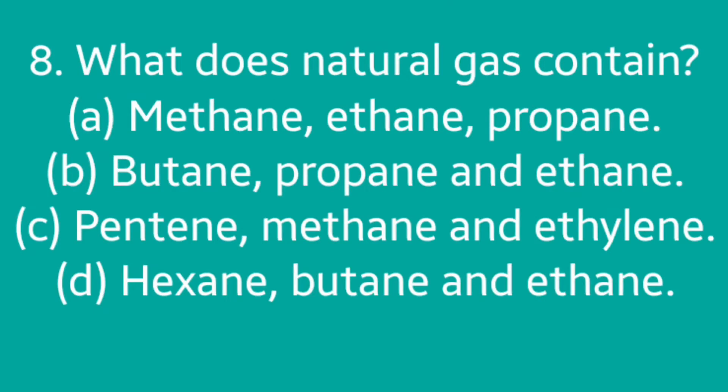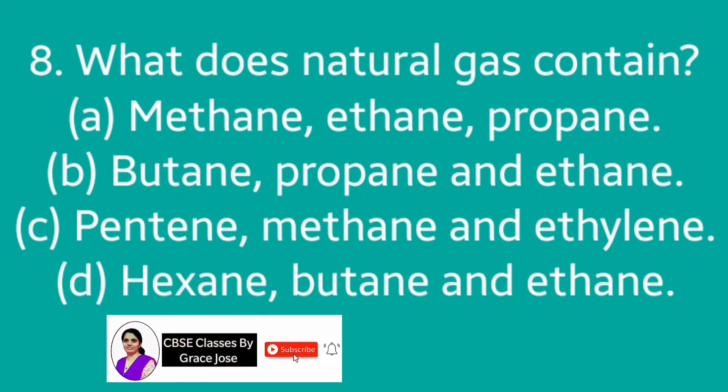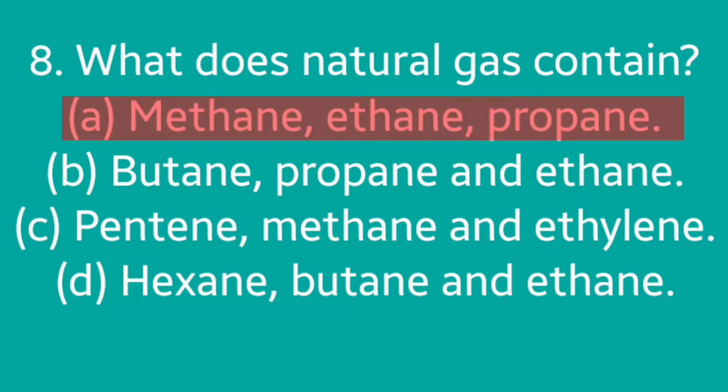Question number 8: What does natural gas contain? Option A: Methane, Ethane, Propane. Option B: Butane, Propane and Ethane. Option C: Pentene, Methane and Ethylene. Option D: Hexane, Butane and Ethane. Answer is option A: Methane, Ethane and Propane.